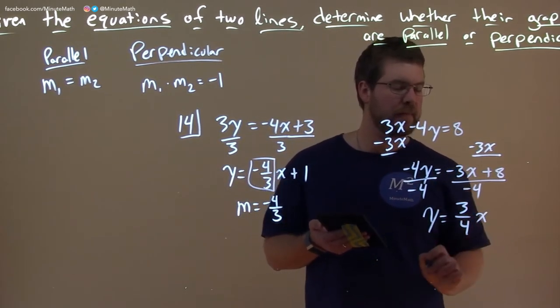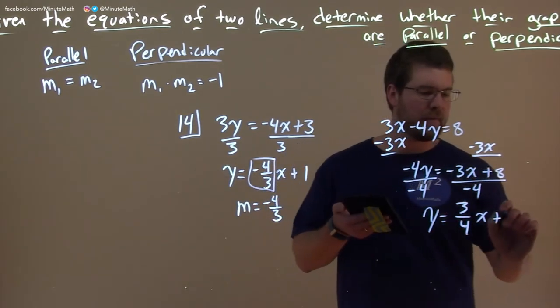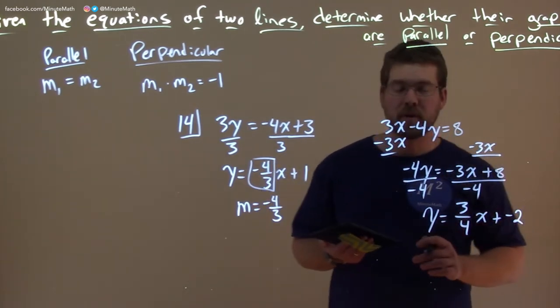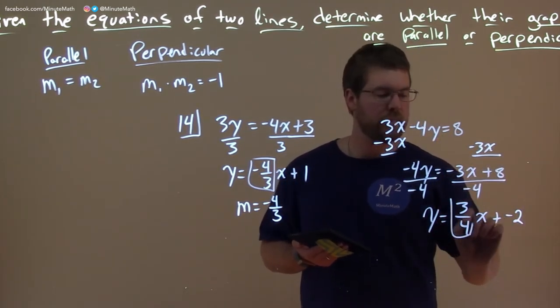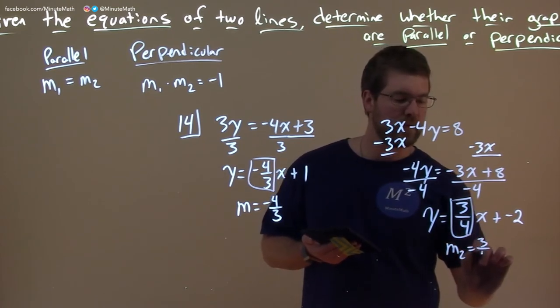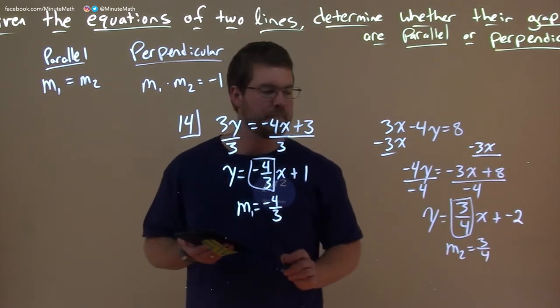And negative 3 divided by negative 4 is a positive 3 fourths. And we have x here, plus 8 divided by negative 4 is a minus 2. But it doesn't really matter, we care about the slope. Slope here is 3 fourths, so m2 is 3 fourths. Let's call this one m1.